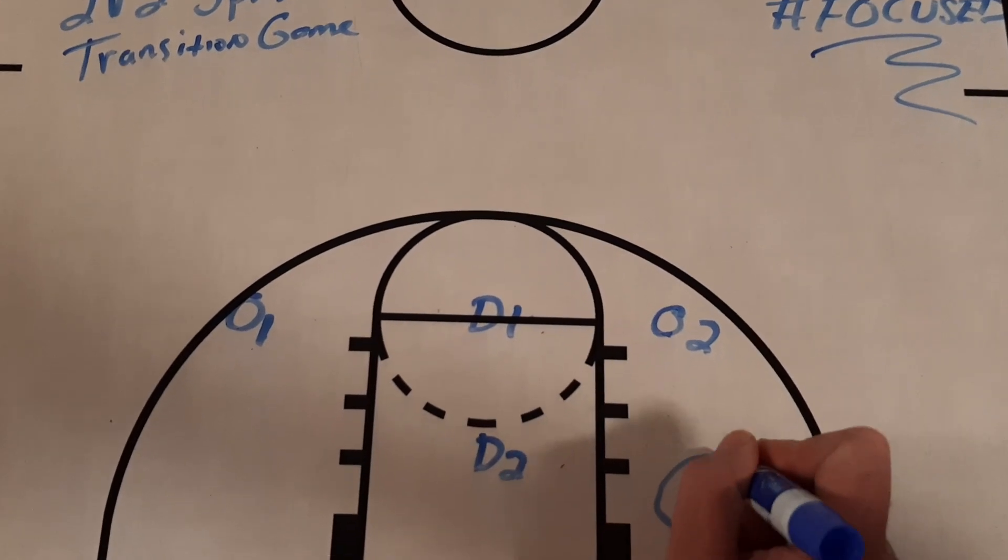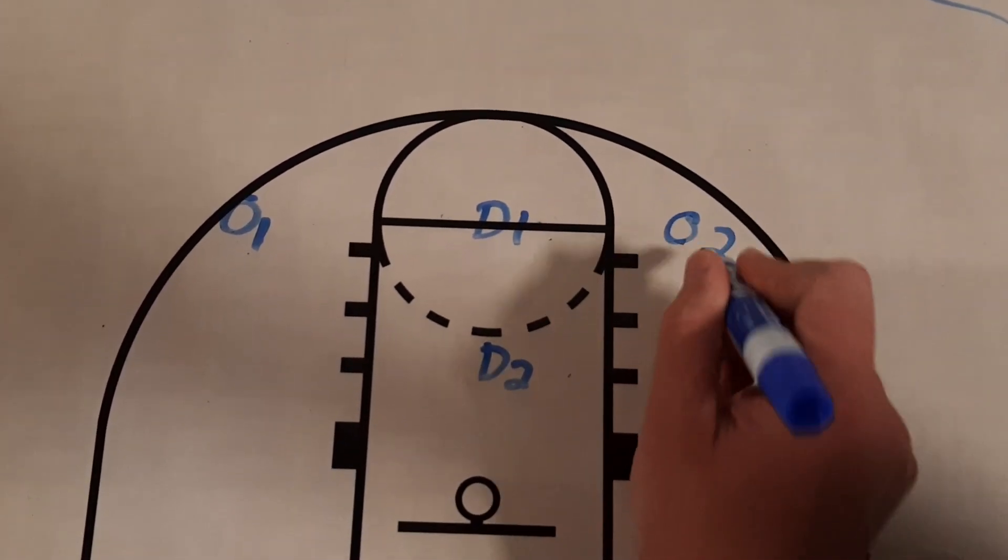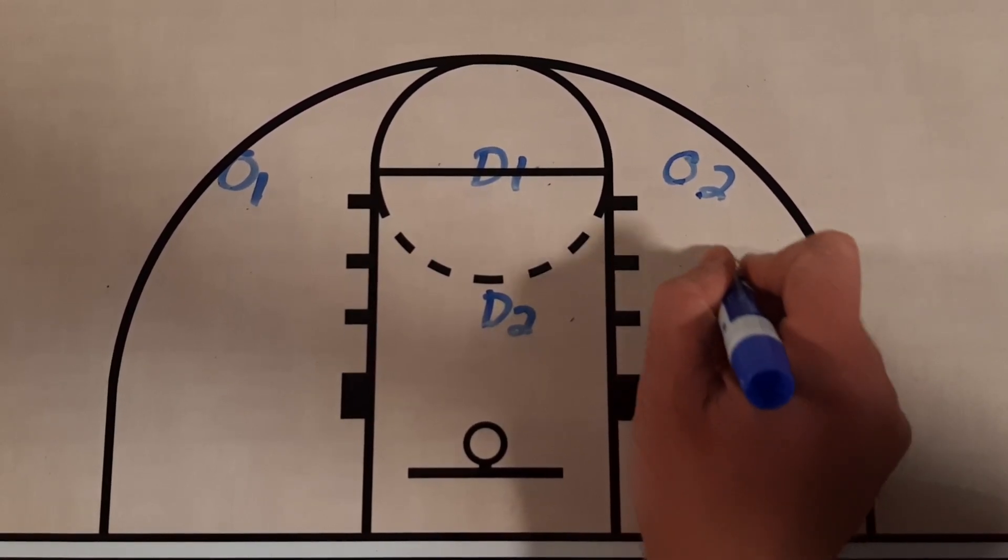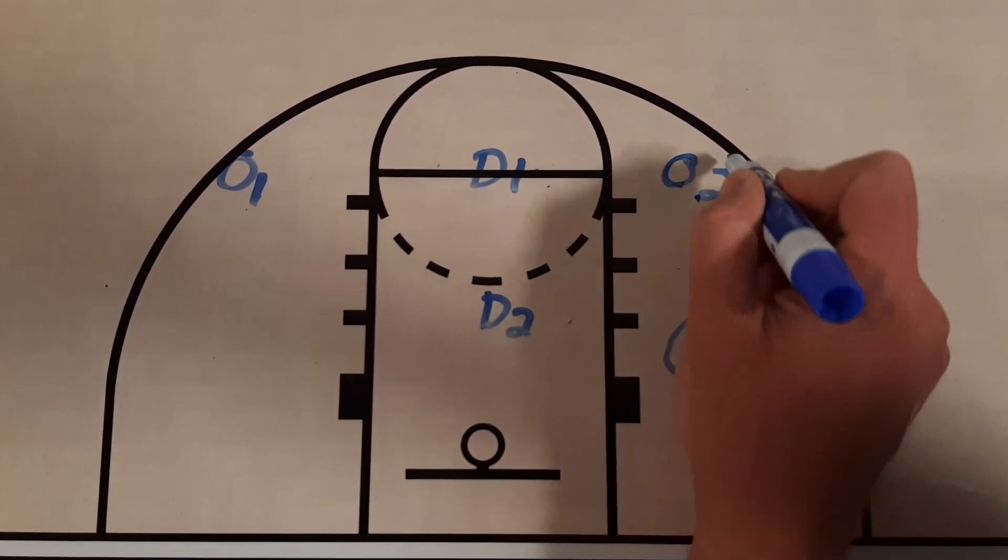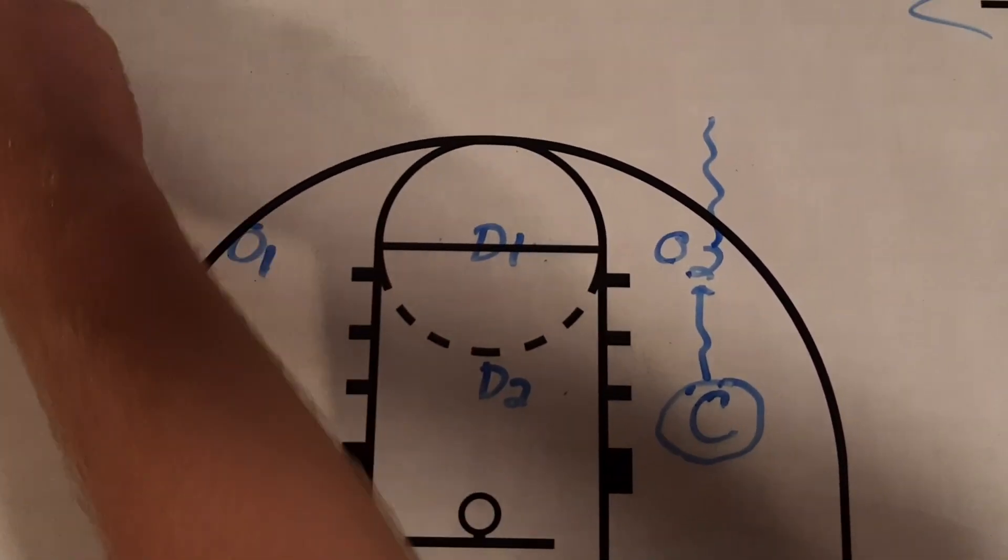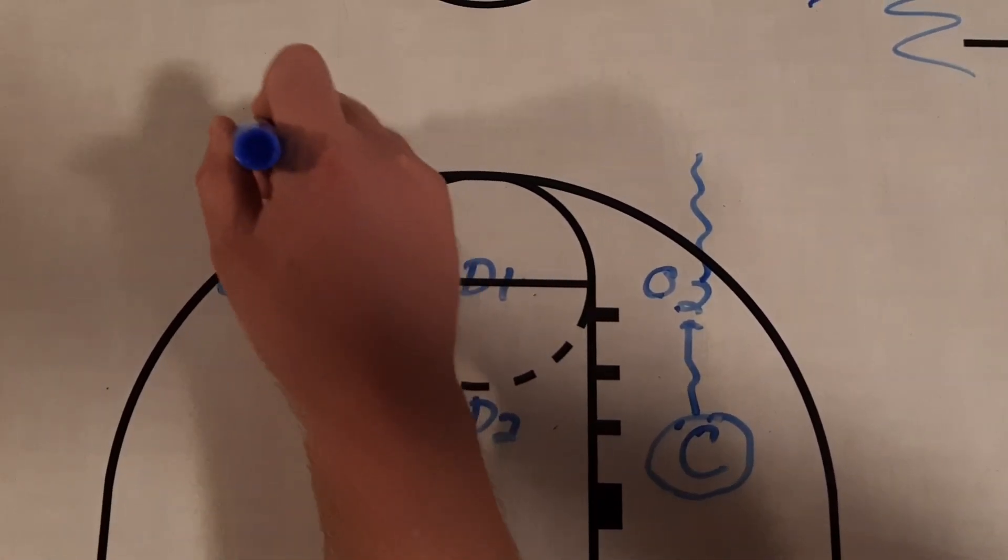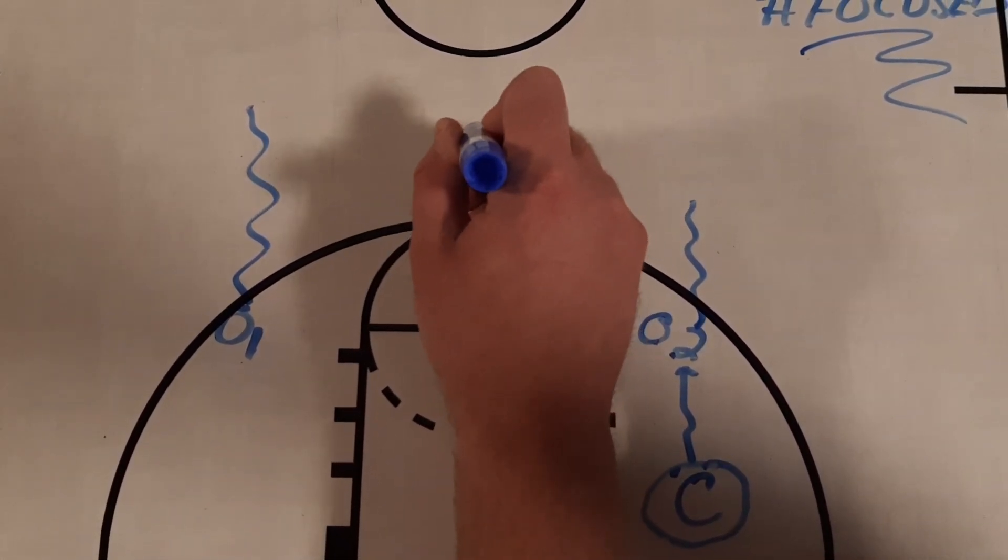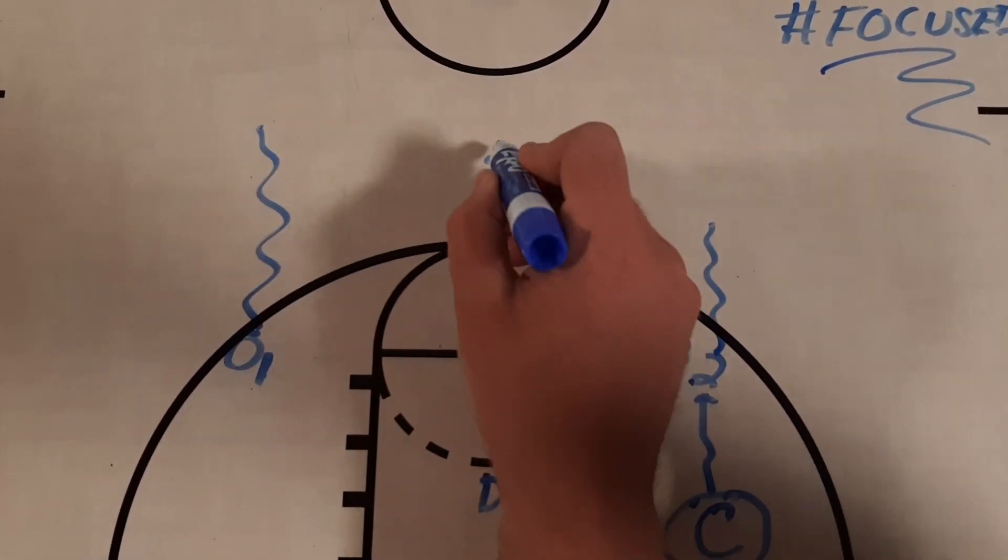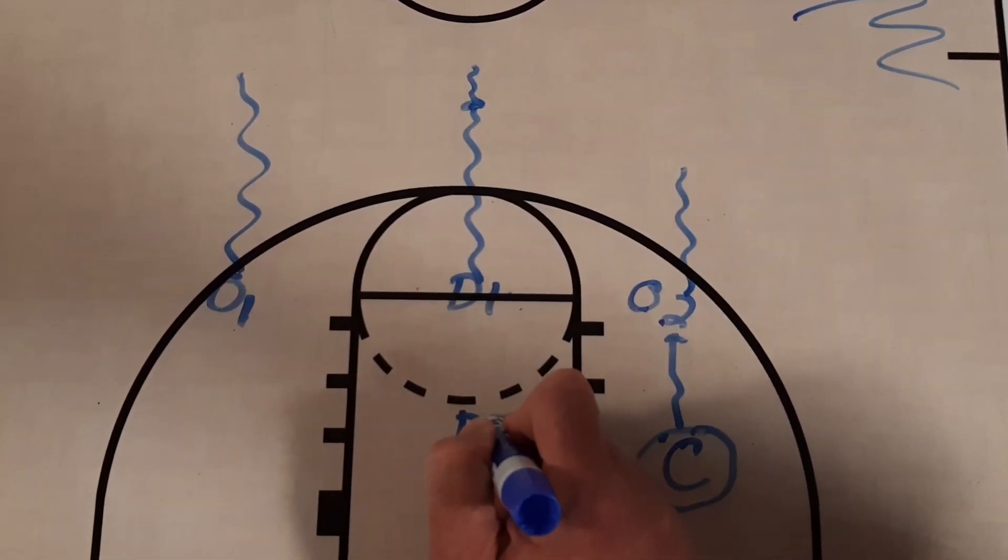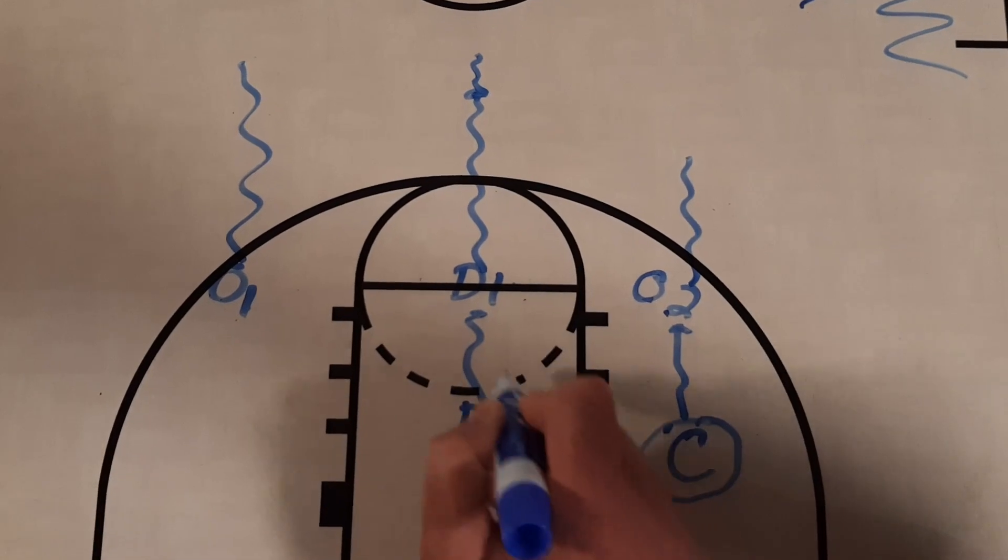But before I do, we're going to start here with the coach. O2 or O1 can get the basketball. We're just going to make it simple here. This coach is going to throw the ball to O2, who's going to immediately take off down the floor. What starts out essentially as a 2-1, almost a 2-on-0 if they get out there ahead.